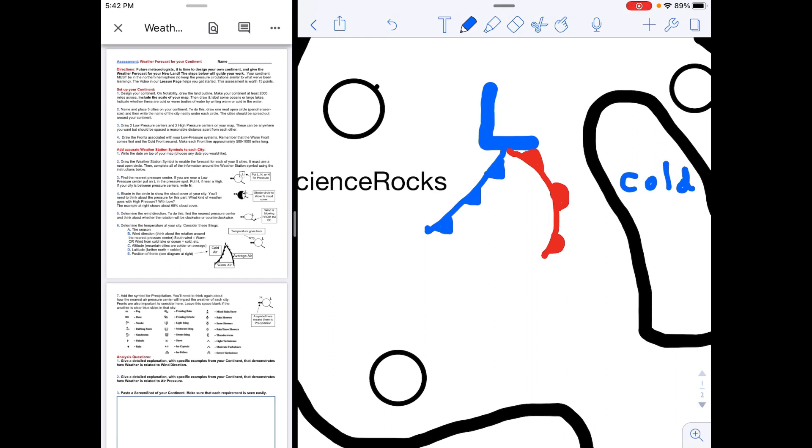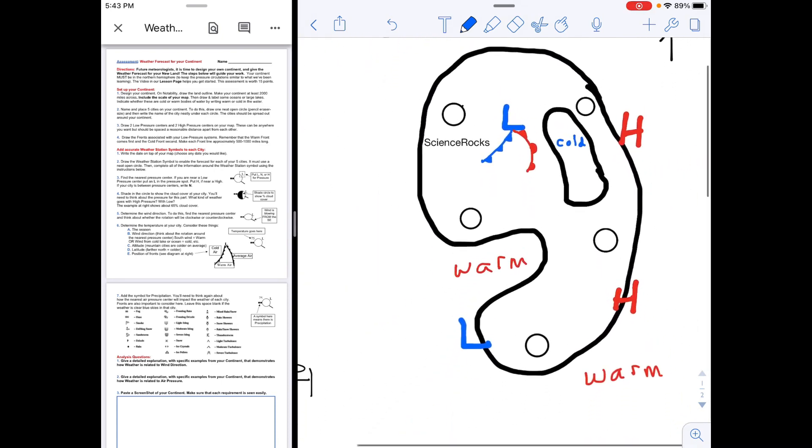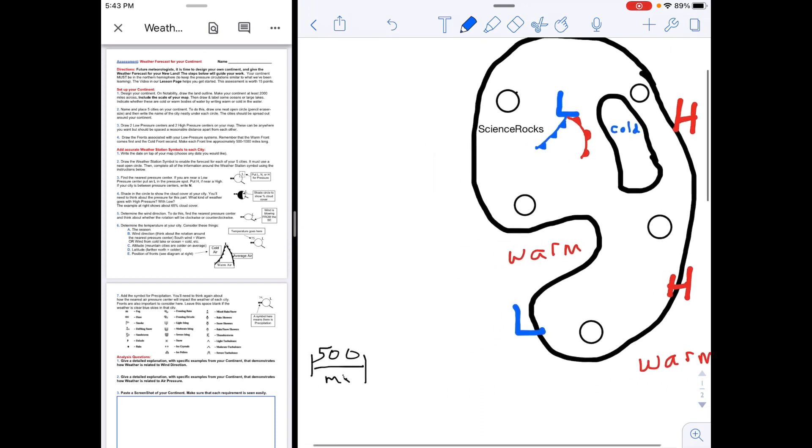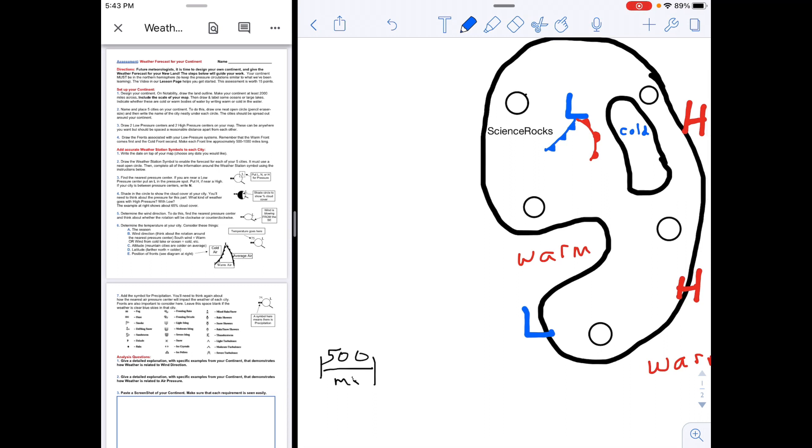You can see then that that low pressure system is done, but you have to do that to each of the low pressure systems that are on there. They should be—the lines should be approximately 500 miles to a thousand miles long, and so I've made those near Science Rocks roughly 500 miles long.